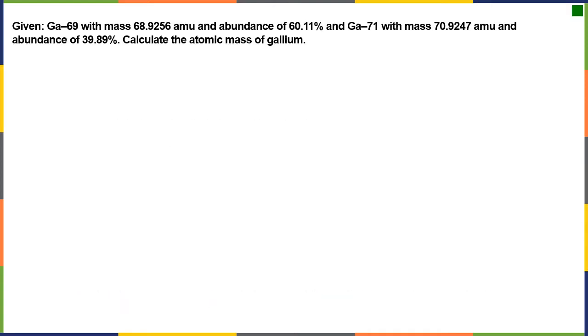All right. If we have gallium-69 and we have gallium-71, and we are given the percent abundances, and we are given the mass in AMUs, atomic mass units, again, about the mass of a proton or a neutron, let's see if we can calculate the average atomic mass of gallium. So to do this, our equation is that the mass or the average mass is going to equal the fraction of one isotope.